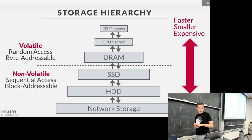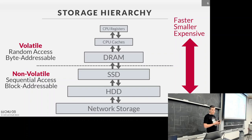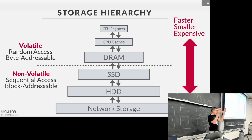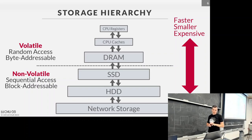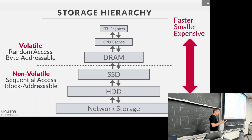A key difference between volatile and non-volatile storage is how we access data. Volatile storage like DRAM is byte-addressable — you can fetch 64 bits at any random offset. Non-volatile storage like an SSD is block-addressable: you can't get exactly 64 bits from a file; you have to fetch the entire block containing those bits, bring it into memory, and then operate on it. This matters because we'll choose algorithms designed for block-addressable data.